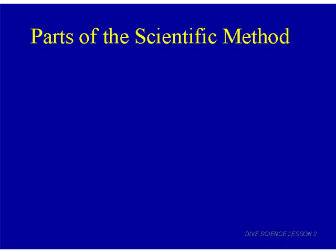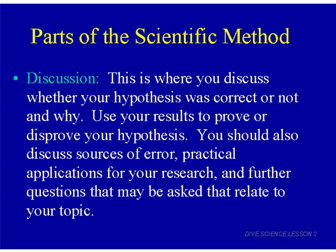That leads us to the last part of the scientific method: the discussion. This is where you discuss whether your hypothesis was correct or not, and why. In our dog food example, maybe brands A, B, C, and D were tested and your hypothesis was that brand C would make the dogs grow the fastest, but in your experiment brand B worked best. So you would say your hypothesis was incorrect — and that's okay.